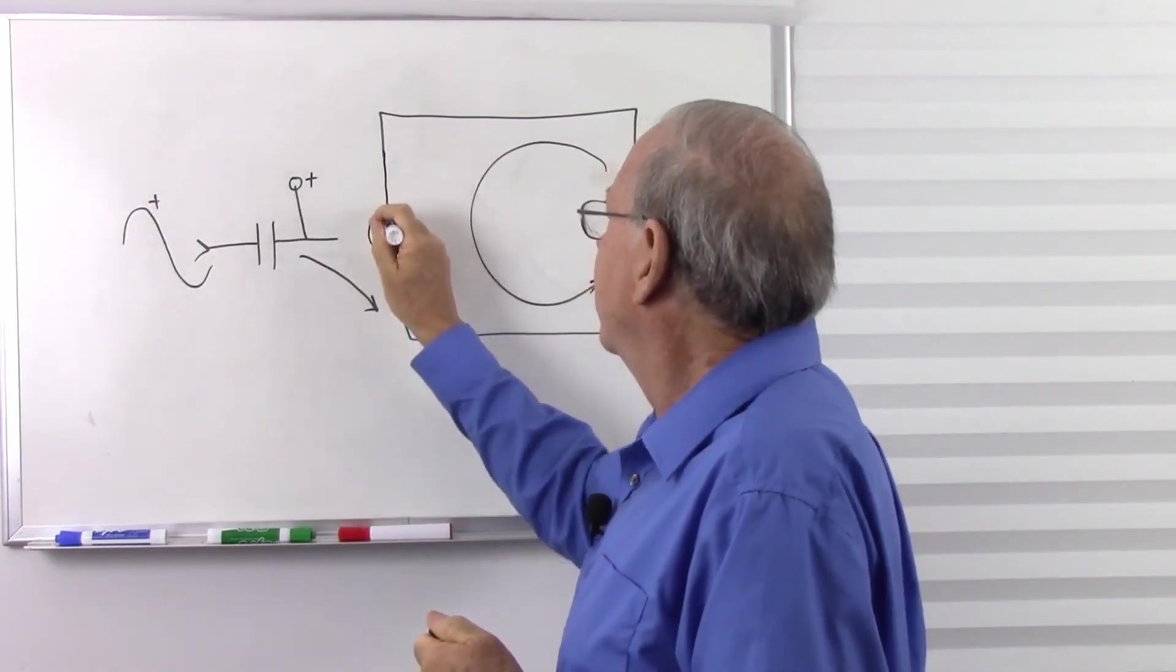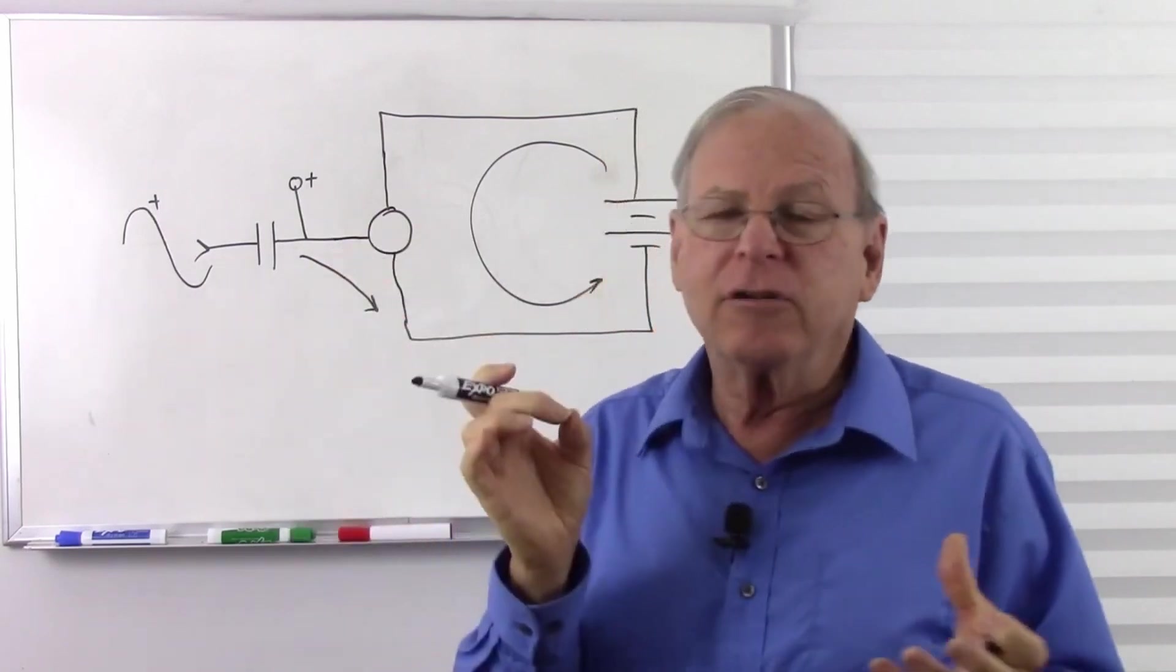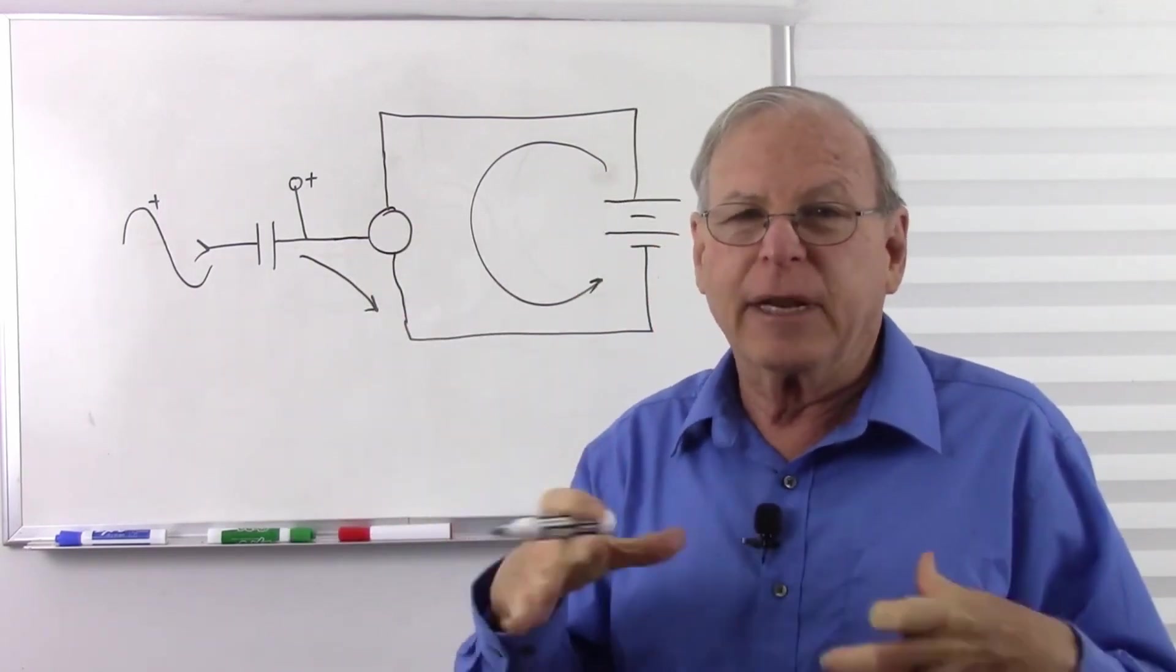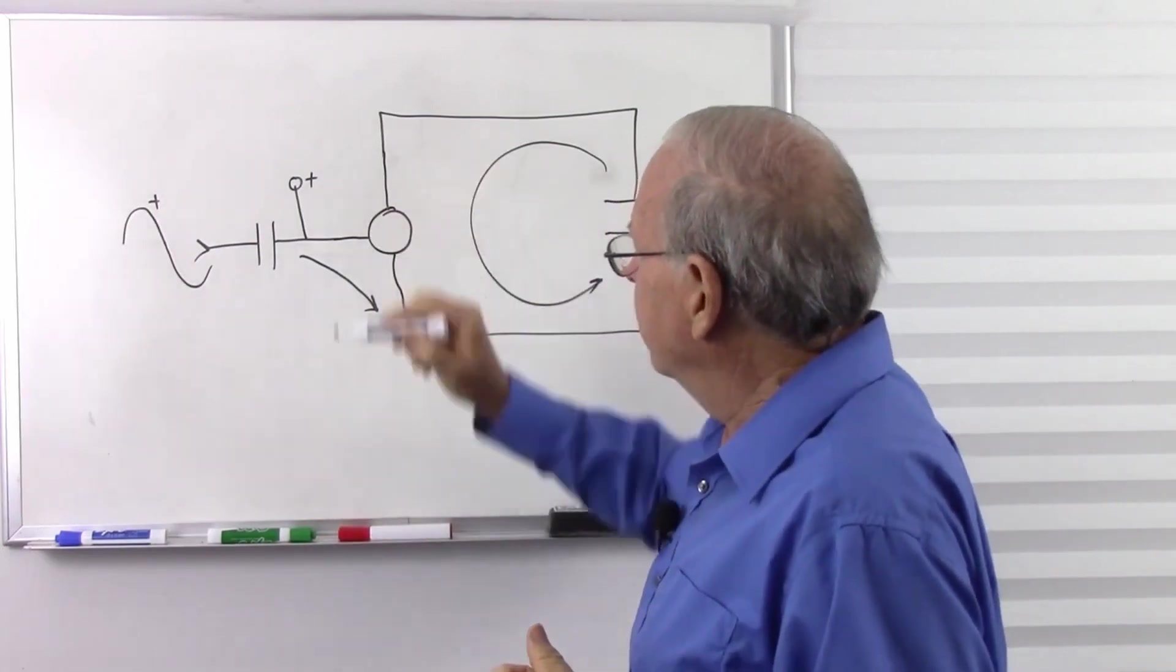So let's just draw a circle. There's our connections. I'm not drawing the filament because even in tube schematics, you don't draw the filament in the schematic. We know it's there. So there's our cathode. There's our anode. There's our grid.